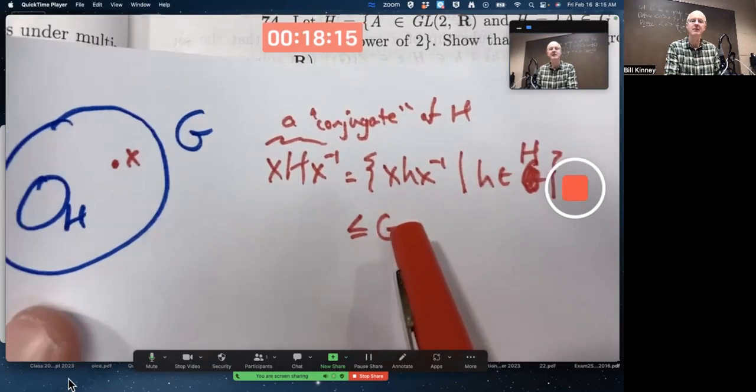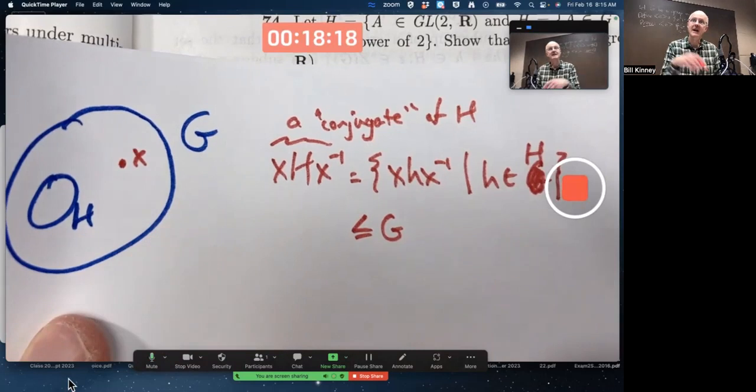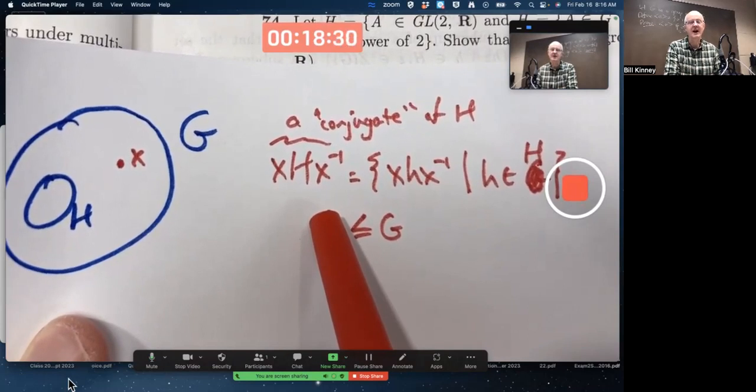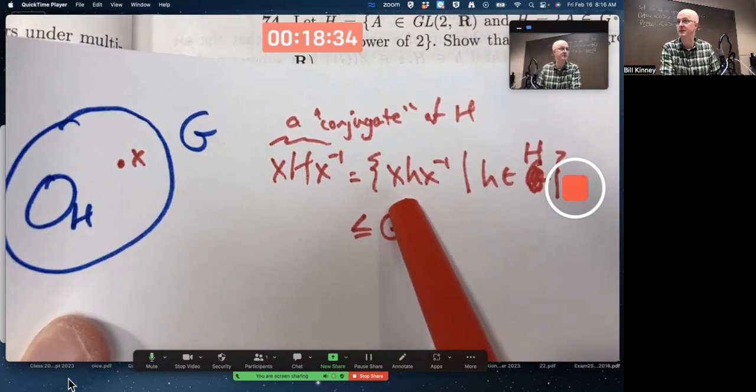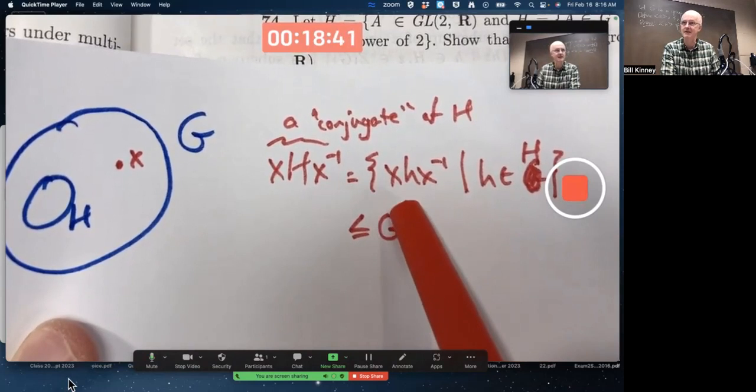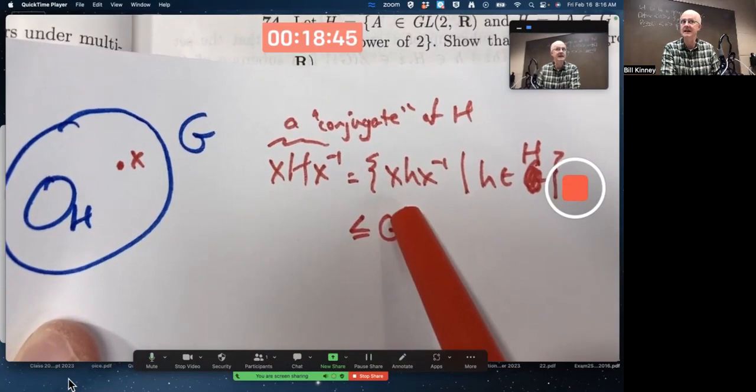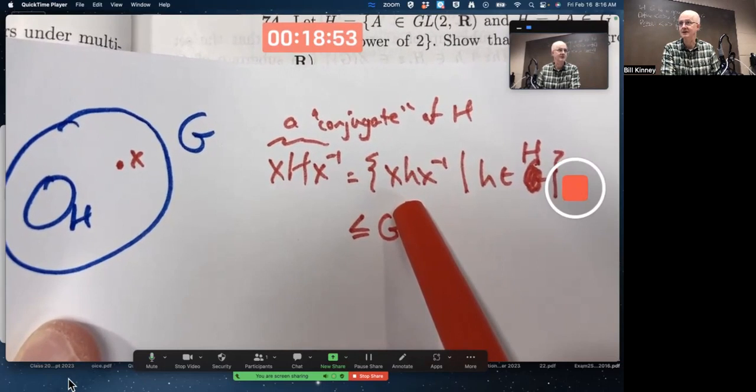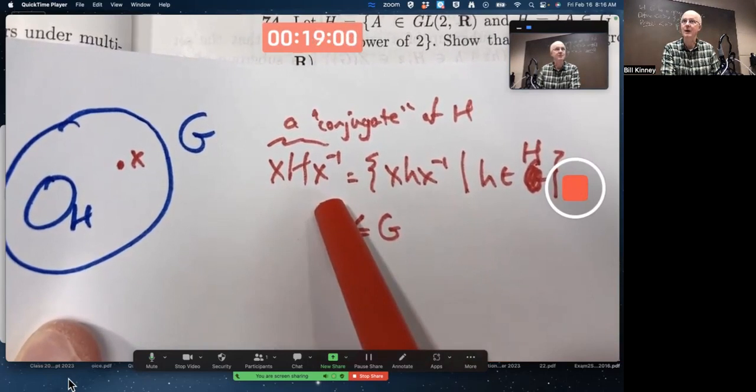But it turns out to be a subgroup even when x is not in H. And it does turn out for certain subgroups H, this is important, even when x is not in H, it equals H still. That happens sometimes. Which kind of makes some intuitive sense. Certainly if the group is abelian, then you could switch the h and the x inverse around and write this as x times x inverse times h. The x and the x inverse give you e. E times h is h. This would not give you anything different than H for any given H if the group is abelian. So certainly if the group is abelian, this is equal to H as well, even when x is not in H.